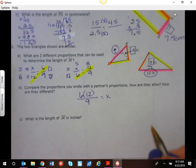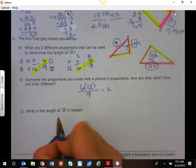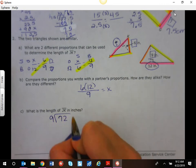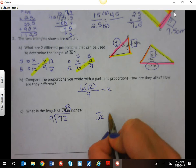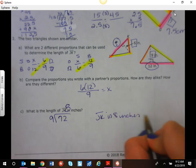So when we solve this, 6 times 12 is 72. 72 divided by 9 is 8. So JK, line segment JK, is 8 inches long.